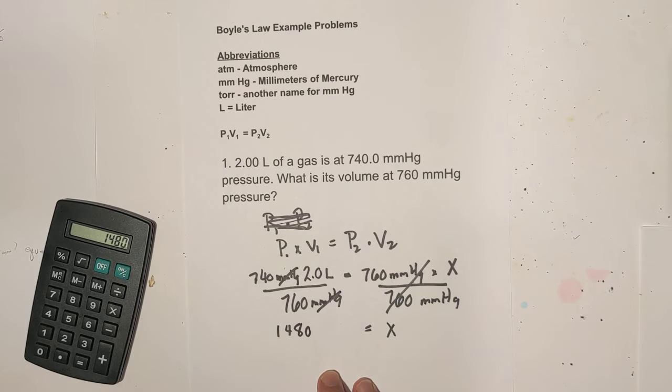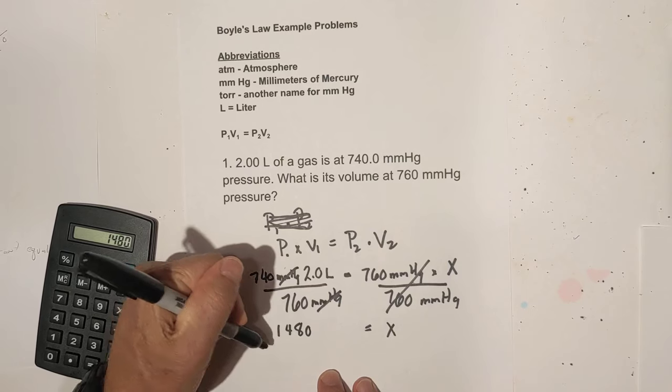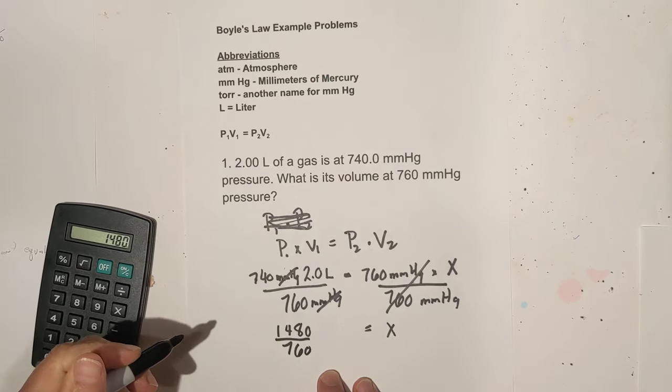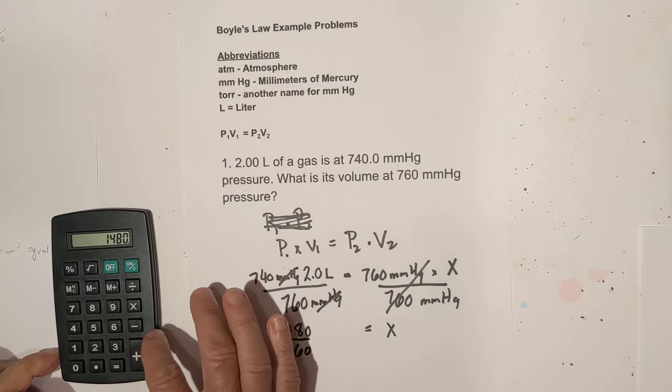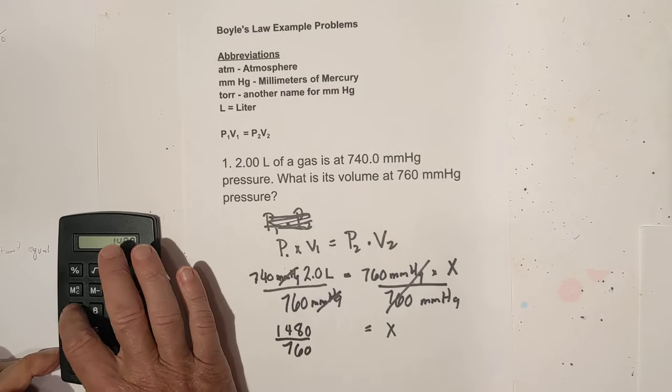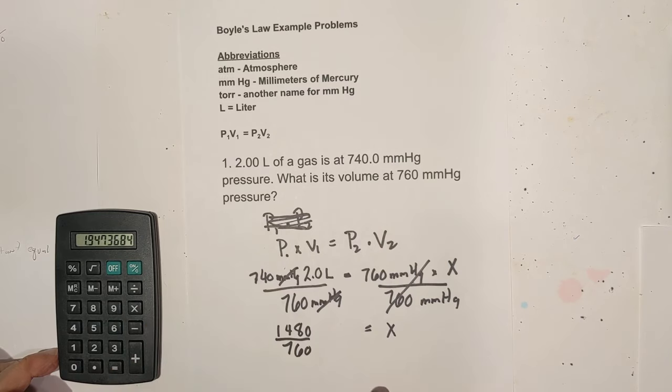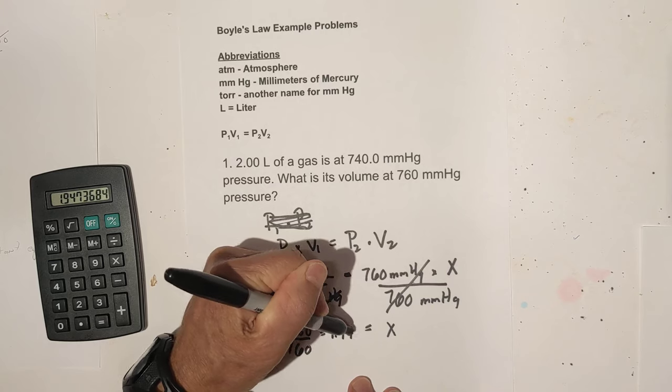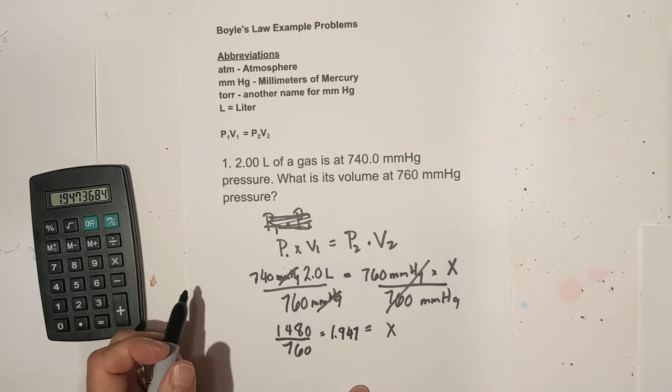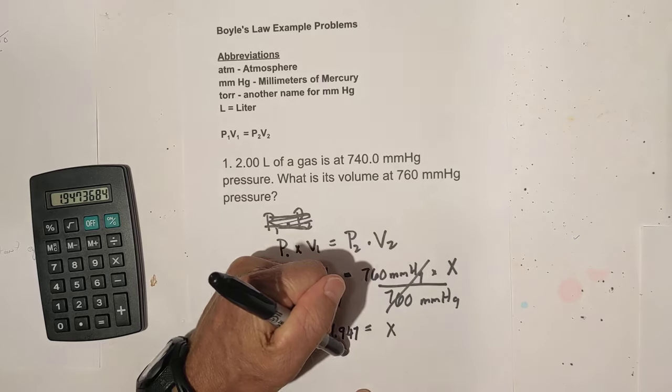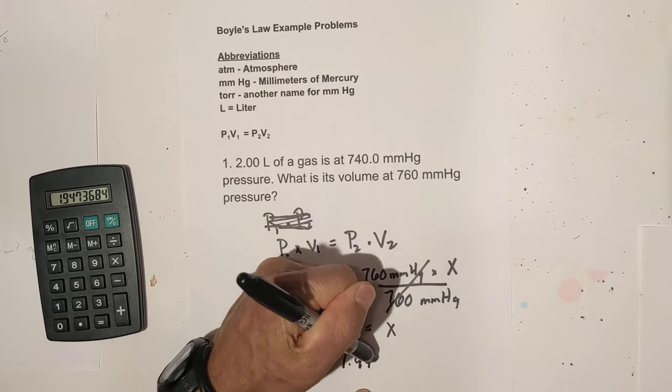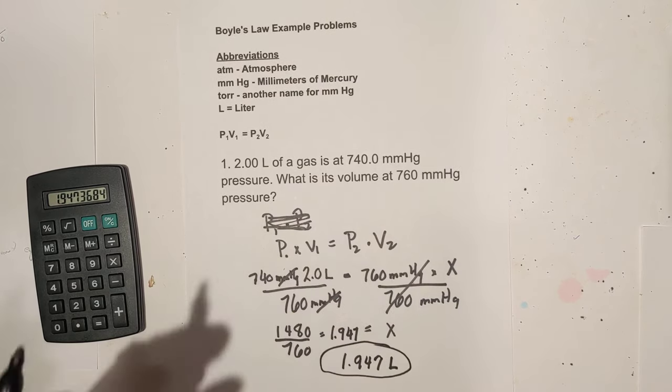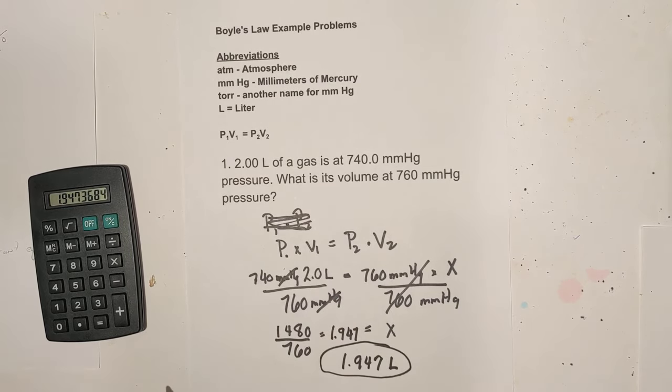The pressure units cancel, so now all we have to do is divide the 1480 by 760, and that is 1480 divided by 760, and our unit of measure is liters. So the answer is 1.947 liters. So that's the first one.